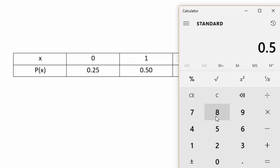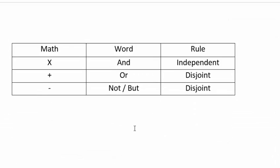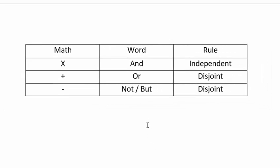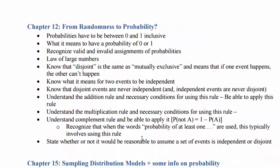The words AND, OR, NOT, and BUT are associated with specific mathematical operations. OR → addition (events must be disjoint). AND → multiplication (events must be independent). NOT/BUT → subtraction, complement (events must be disjoint). Addition and subtraction follow the same disjoint rule. If you have questions feel free to email — good luck.